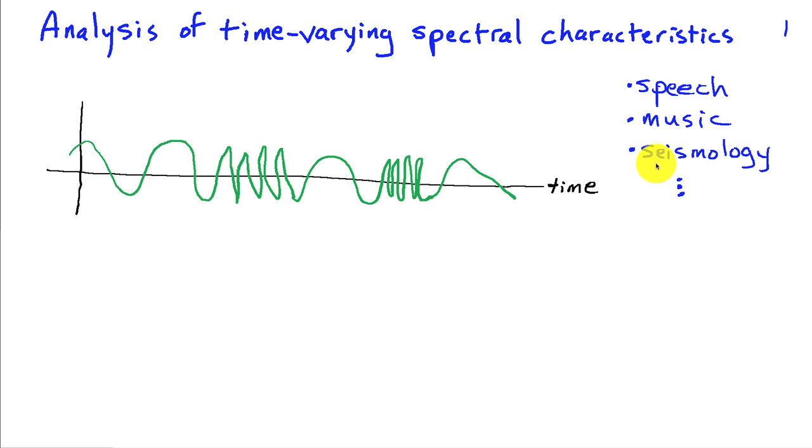Signals that have varying spectral characteristics occur commonly in speech and music, seismology, signals from the electrical activity in the brain, and so on. There's a lot of cases where we want to understand how the energy in the signal is changing over time and frequency.